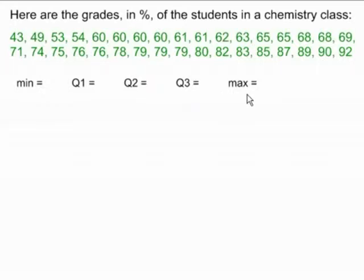The easiest ones to find are the minimum and the maximum, so we will find those first. The minimum is the lowest number in the set of data. In this case, that's 43. And the maximum is the highest number in the set of data, which in this case is 92.